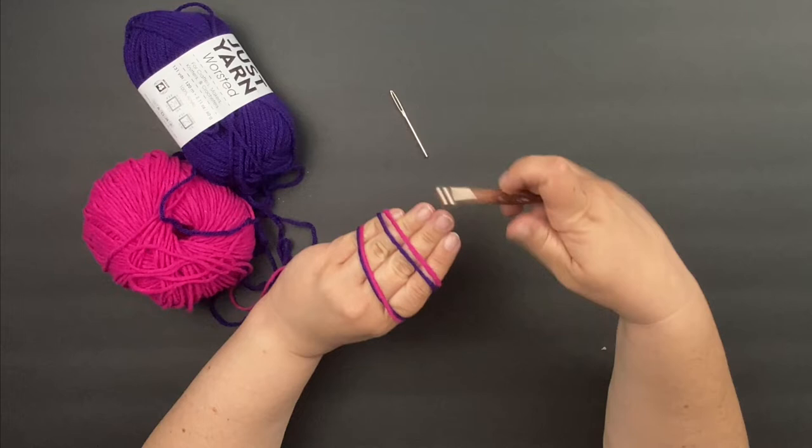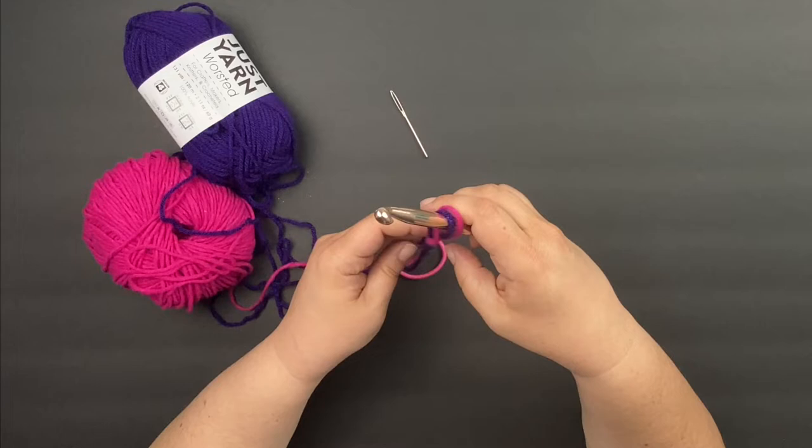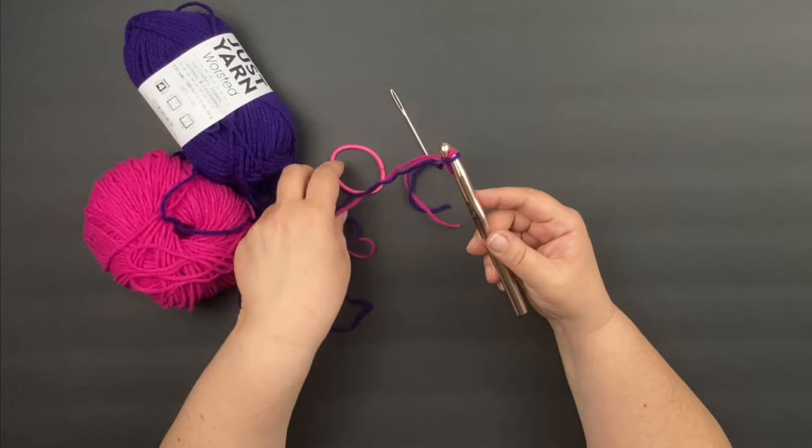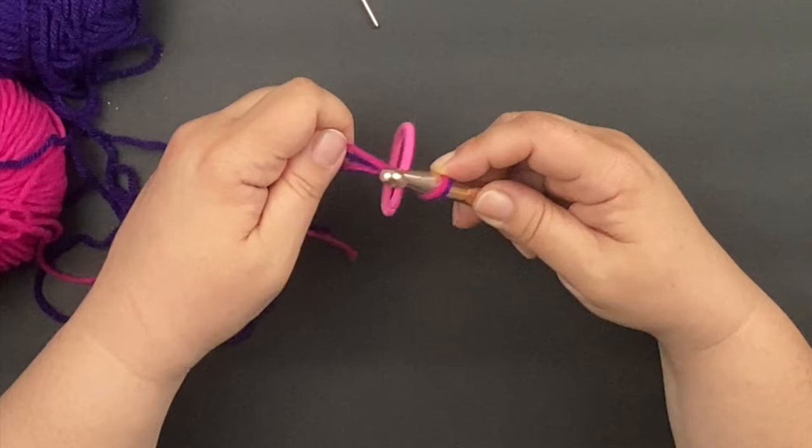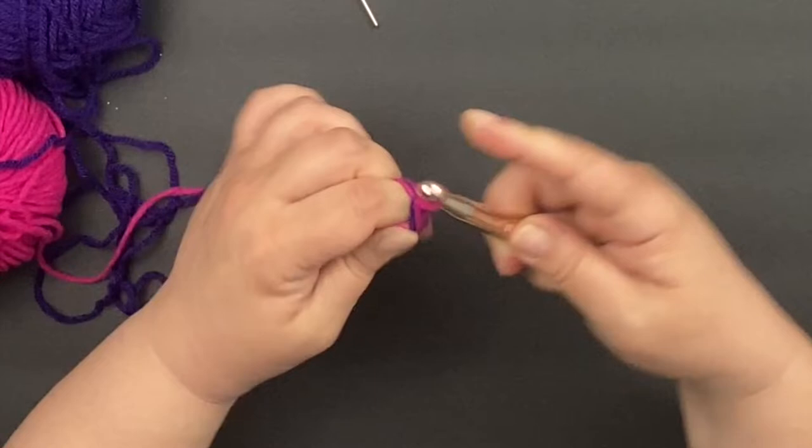The first thing we're going to do is create a slipknot. Once I get the slipknot on my hook, I'm going to grab my hair tie and I'm going to put it on the back end of my hook here, just so I can thread it. Now I'll start working on the hair tie. I want to chain three to begin with. Two and three.